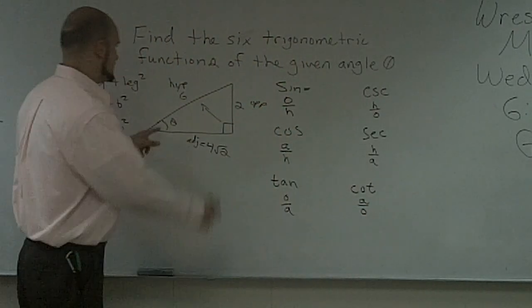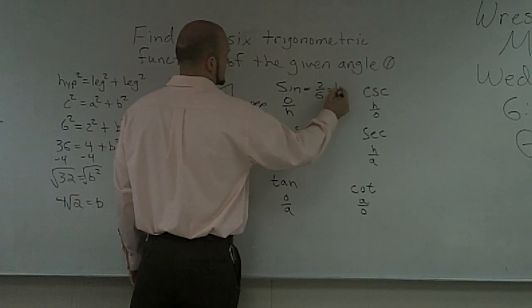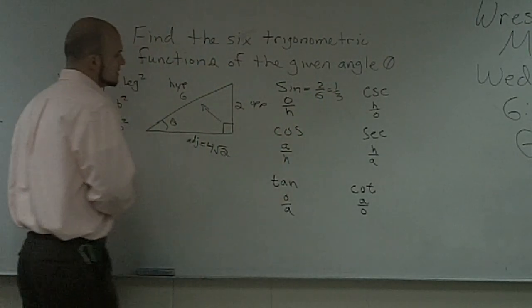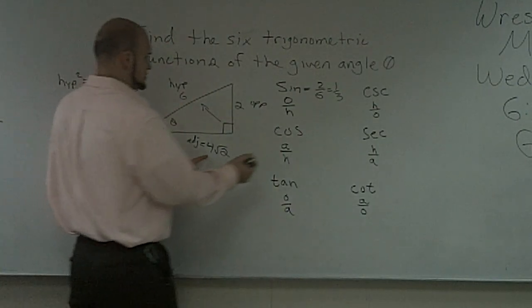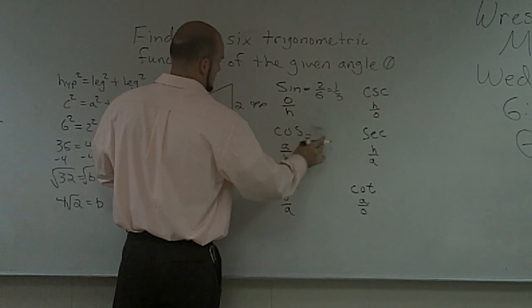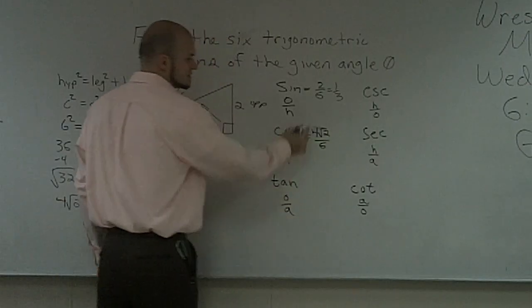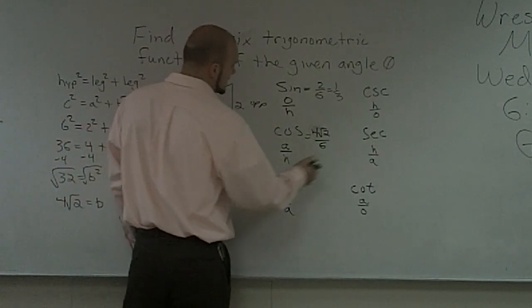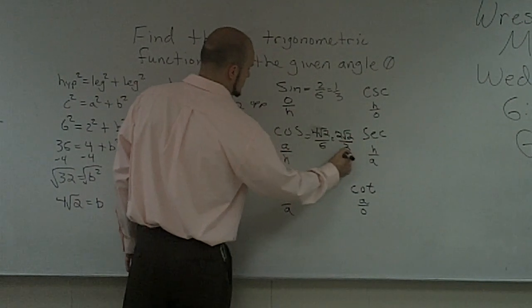So, opposite of theta is going to be 2 over my hypotenuse, which is 6. 1 third. Cosine is going to be adjacent, 4 root 2 over 6. I can divide the top and bottom by 2, so that's going to equal 2 root 2 over 3.